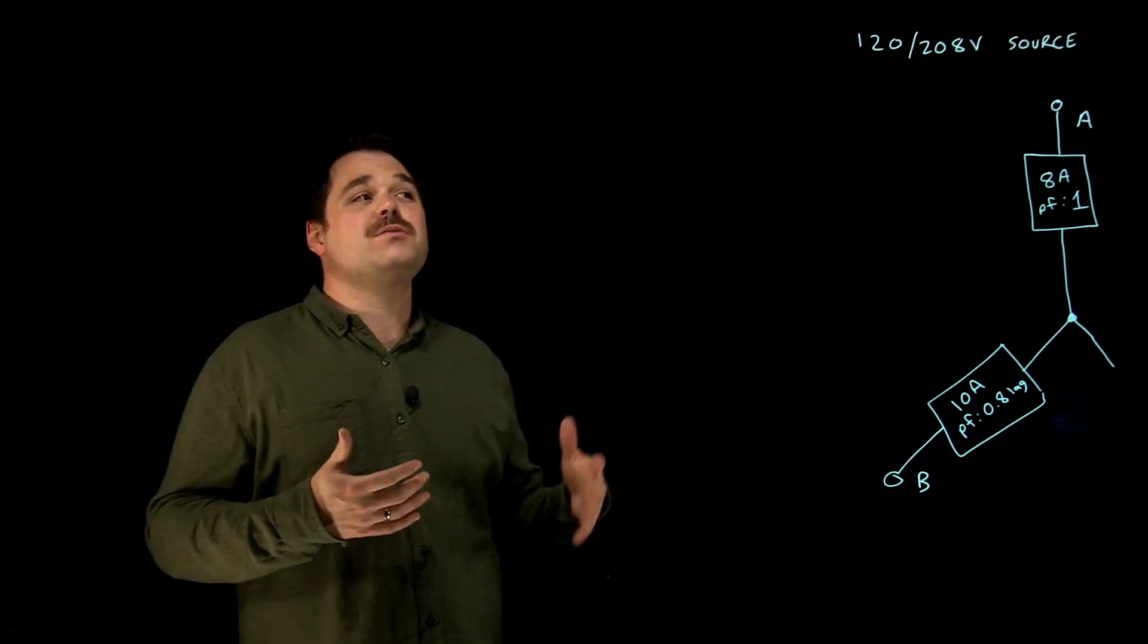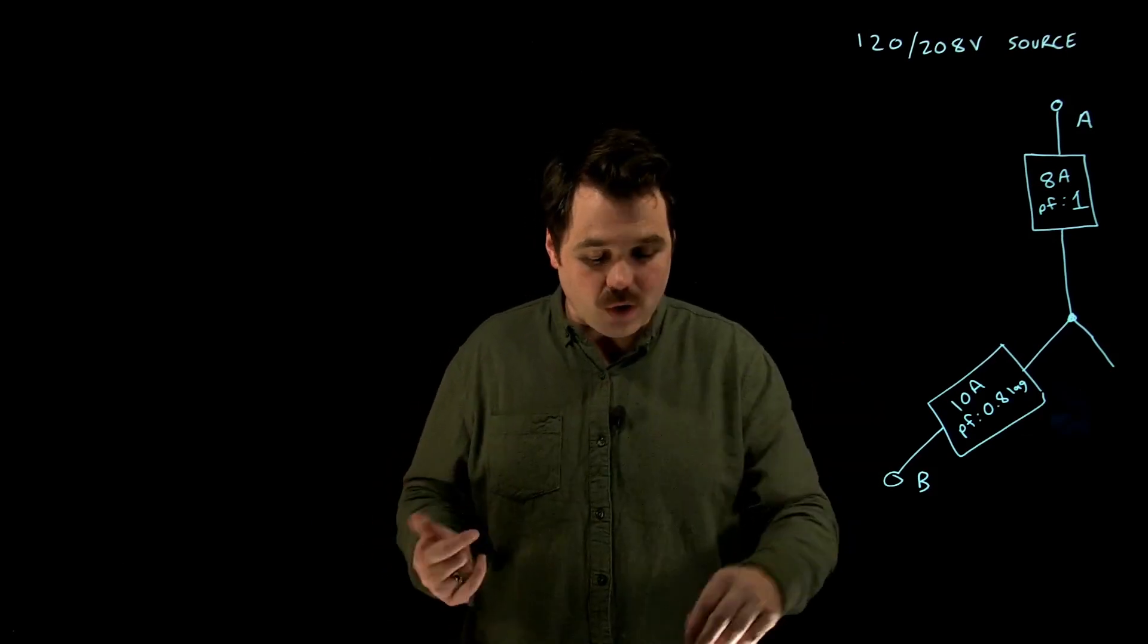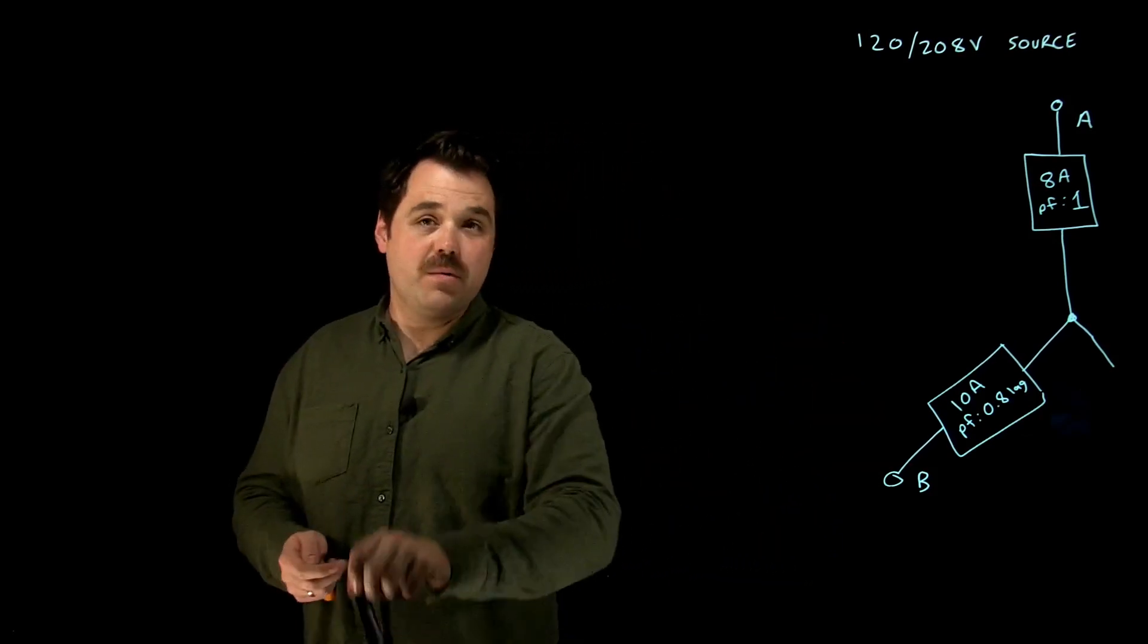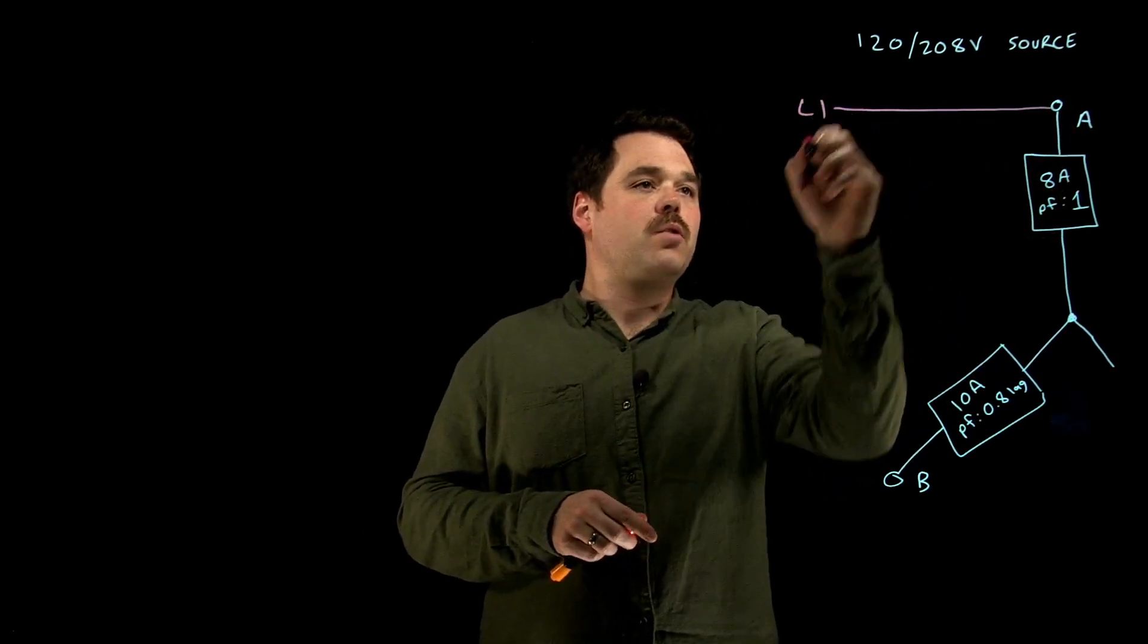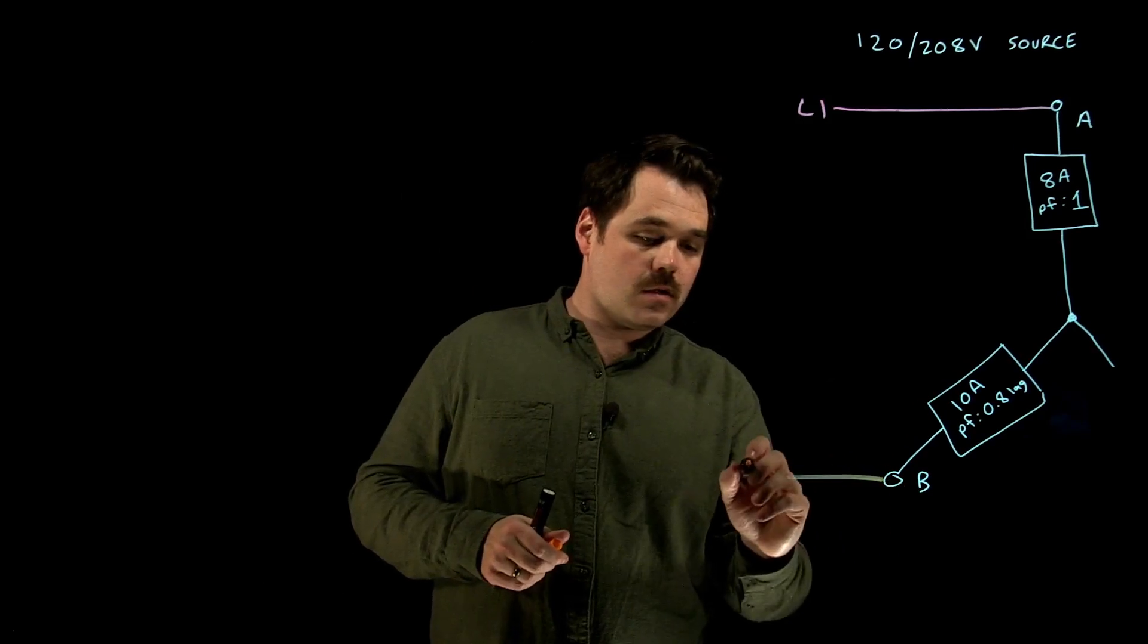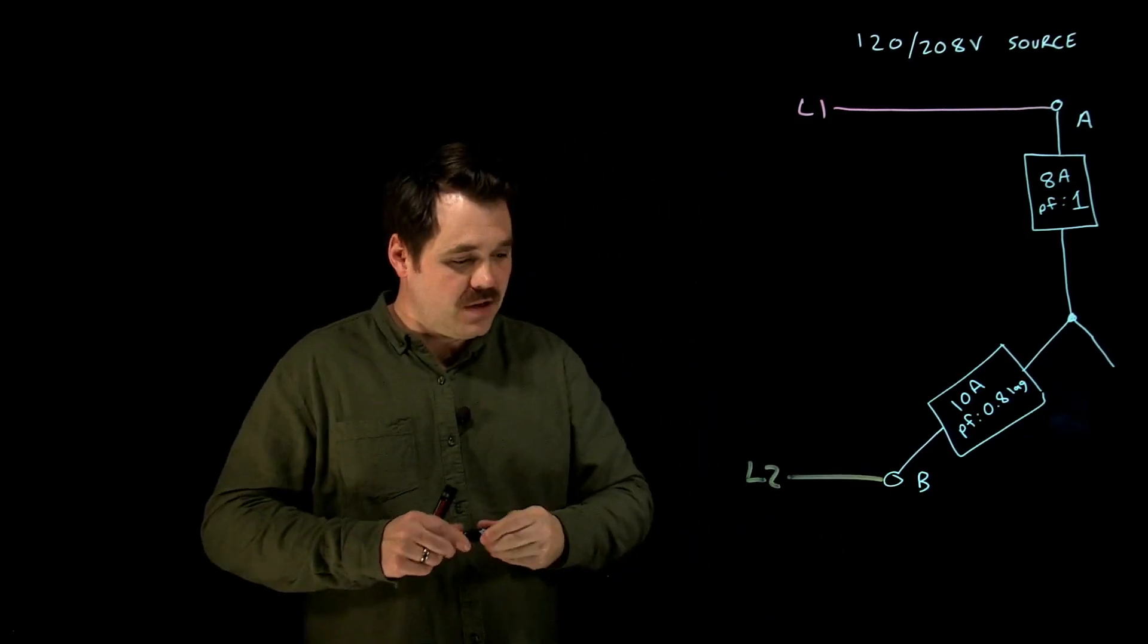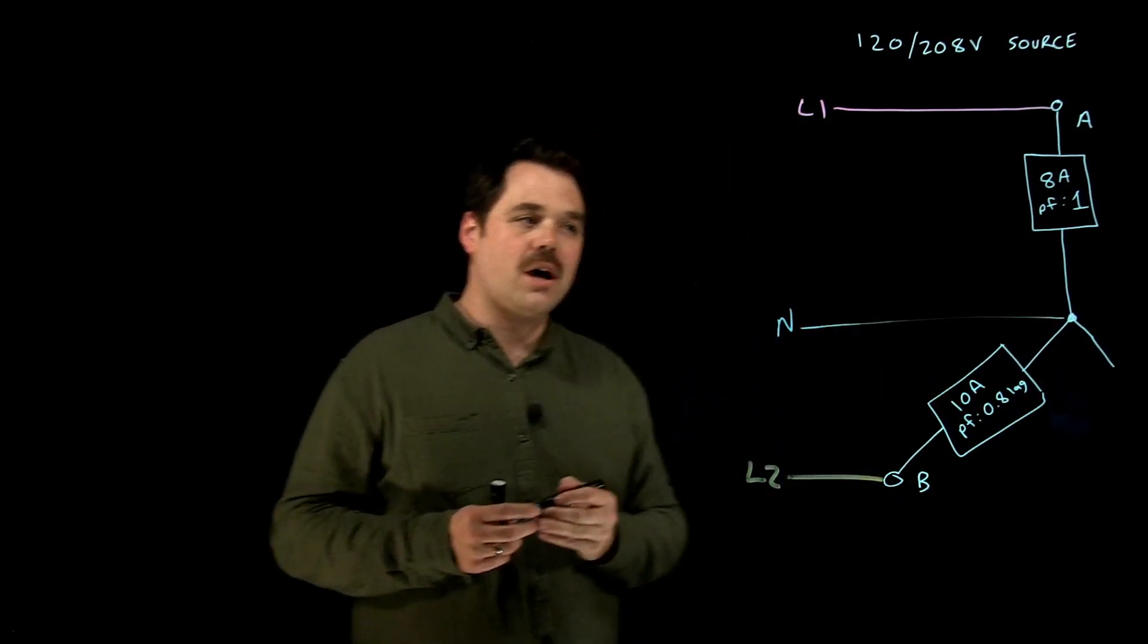So in this example, we are using a 120/208 volt three-phase source, which we know we would have L1 connected up to A phase, line to connect it up to B phase, and in this circuit as well we would see a neutral conductor.